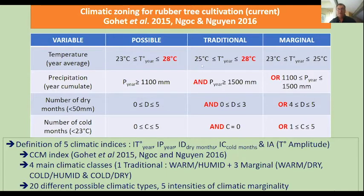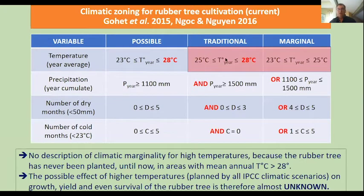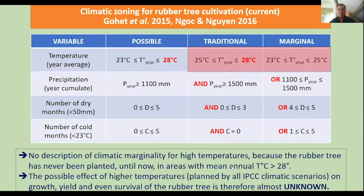Importantly, marginality has been described regarding temperature only for cold climates. It is currently impossible to discriminate between traditional and marginal areas because of high temperature, as the rubber tree has never been planted in areas with mean annual temperatures above 28 degrees. Therefore, the possible effect of higher temperatures — as planned by all IPCC scenarios — on growth, yield, and even survival of the rubber tree is almost unknown.